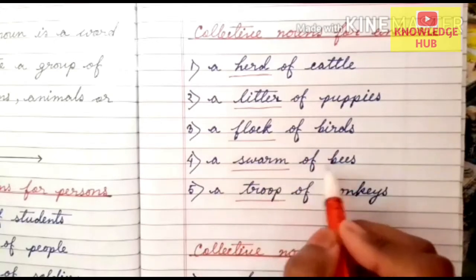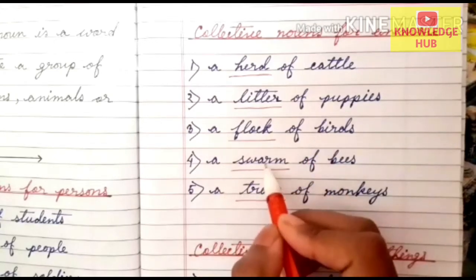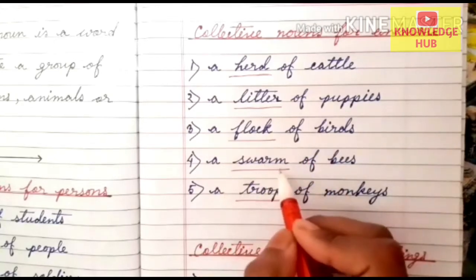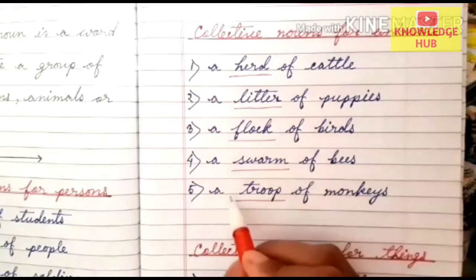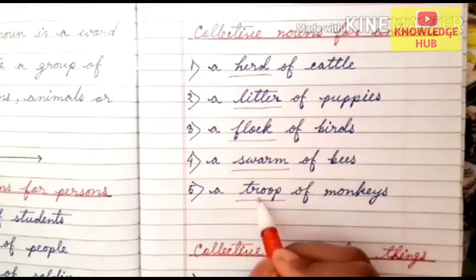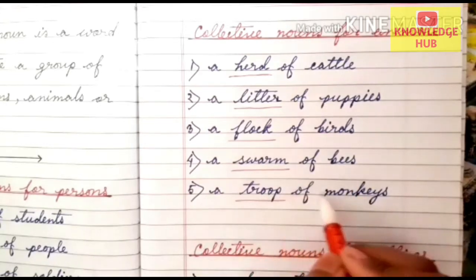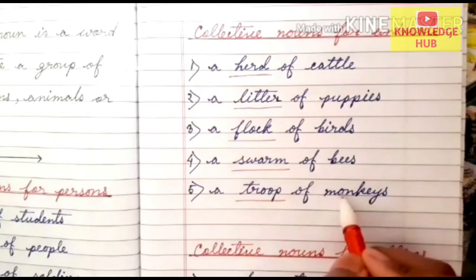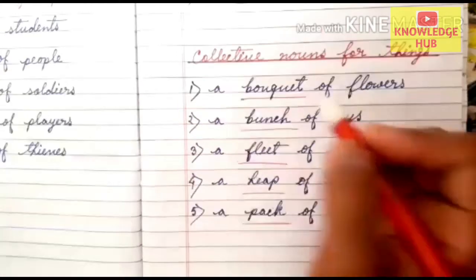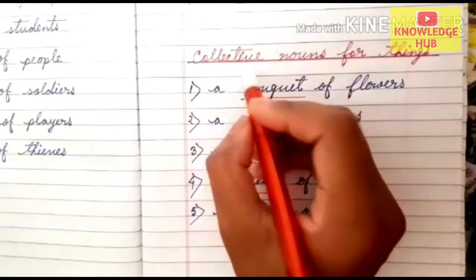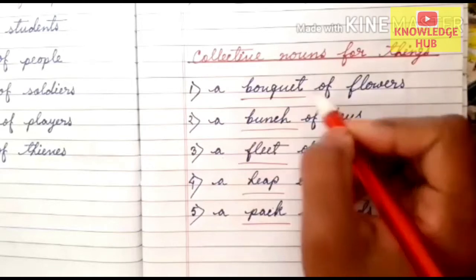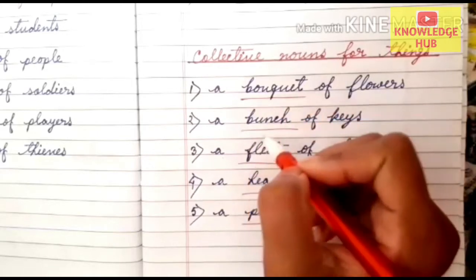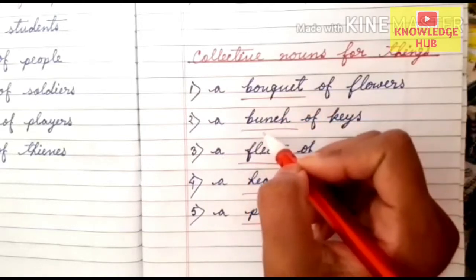A swarm of bees — here the word 'swarm' refers to the group of bees. A troop of monkeys — here the word 'troop' refers to the group of monkeys. Next, collective nouns for things. So these are the examples of collective nouns for things.